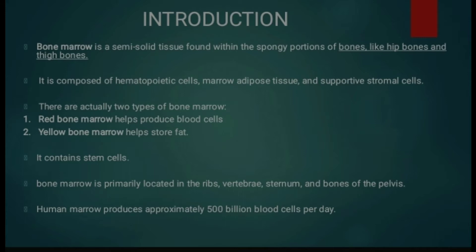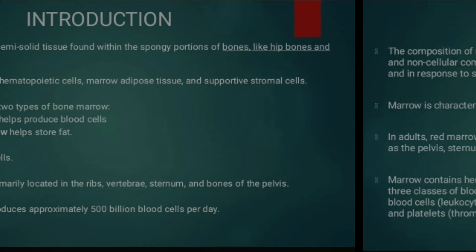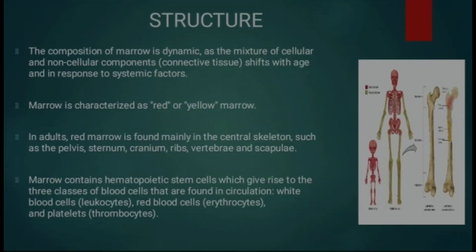Bone marrow primarily ribs, vertebra, sternum, aur bones of pelvis mein present hota hai. Humans mein approximately 500 billion blood cells per day marrow ki production hoti hai. Structure: composition of marrow is dynamic, matlab ye do components ka mixture hota hai — cellular aur non-cellular — aur in response to systemic factors change ho sakta hai.